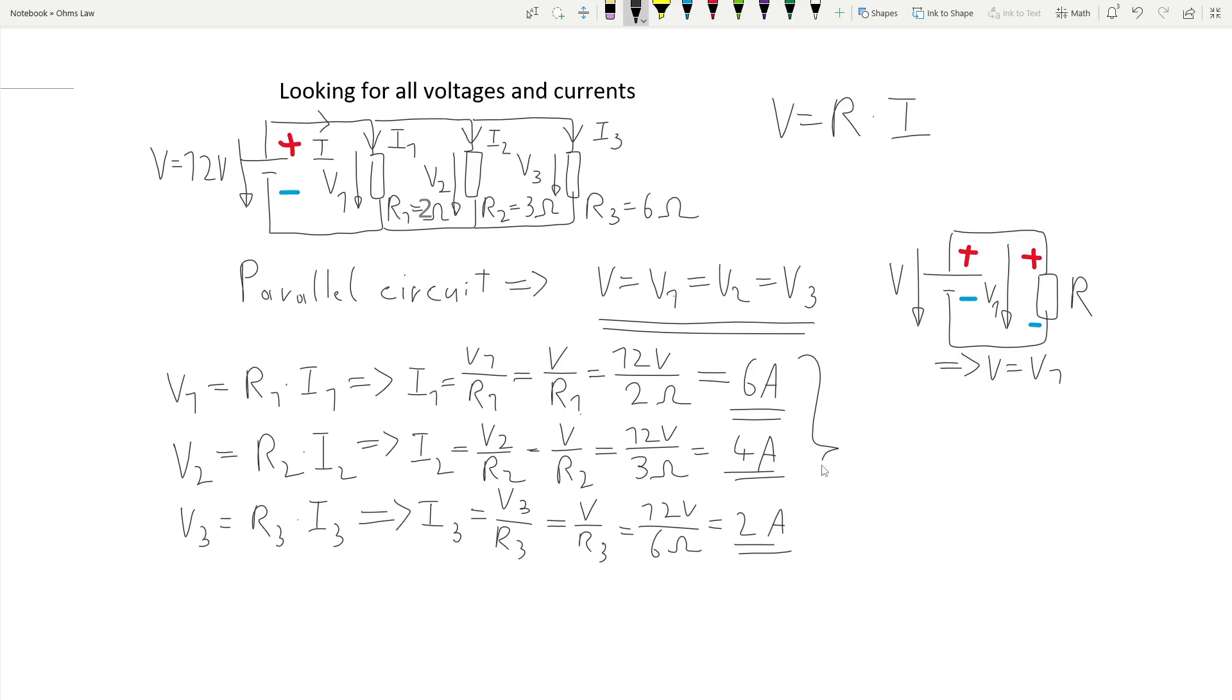If we take a closer look at the resistors and their respective currents, we can see that the resistor with the highest resistance, that is R3, has the lowest current. Additionally, the resistor R1 has the highest current due to its low resistance.